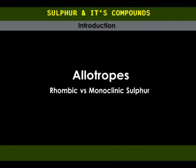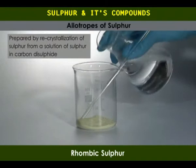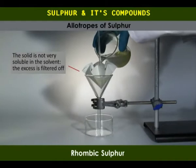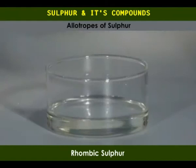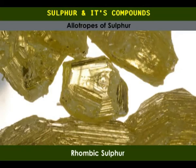Rhombic sulfur can be prepared by recrystallization from a solution of sulfur in carbon disulfide. The solid is not very soluble in the solvent and the excess is filtered out. The solution is left to stand for some time to allow carbon disulfide to evaporate completely. Slow evaporation produces crystals of rhombic sulfur.